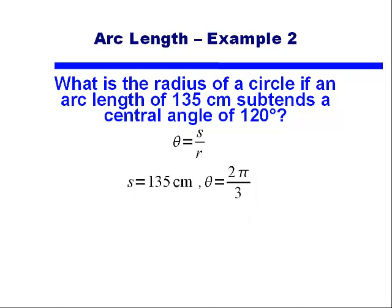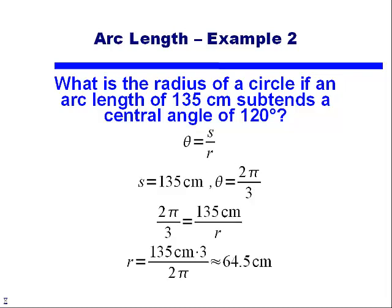And now we can use the formula. When we plug in theta is equal to 2 pi over 3 and S equaling 135, with R still being our unknown, we can find that R is equal to 135 centimeters times 3 divided by 2 pi.